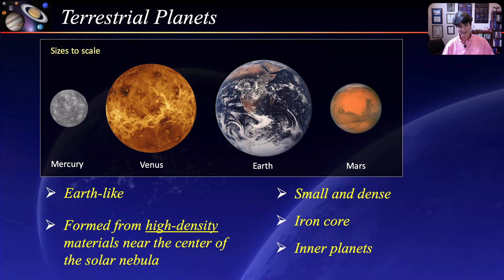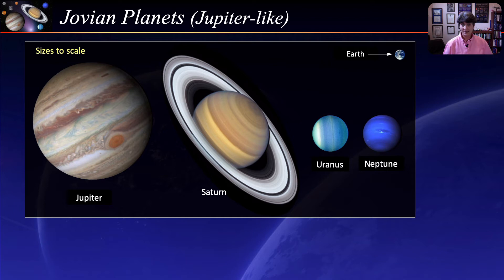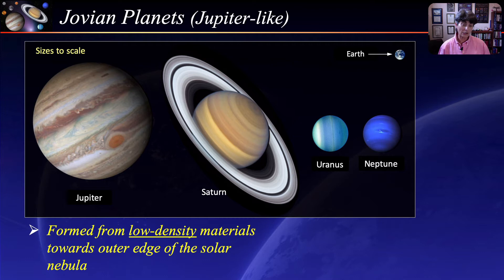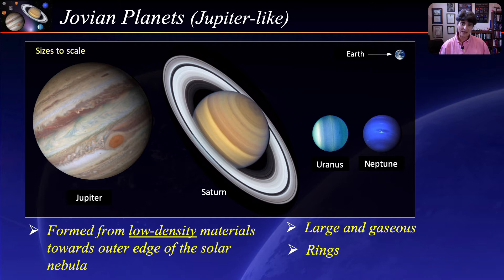The Jovian planets, or Jupiter-like planets — Earth is included in the corner for size comparison. Unlike terrestrial planets, the Jovian planets formed from the low-density materials that were flung far out towards the outer edge of the solar nebula. Since they formed from low-density material, they are all very large and gaseous. They all have rings, although Saturn has the most prominent and famous ones. They are also referred to as the outer planets.